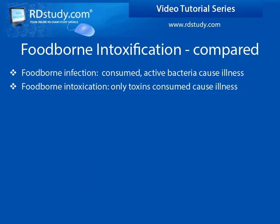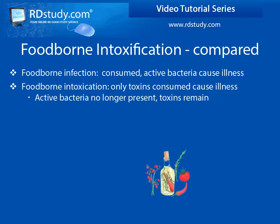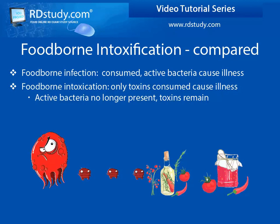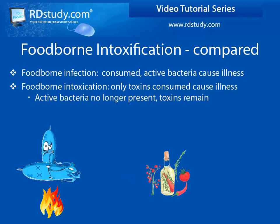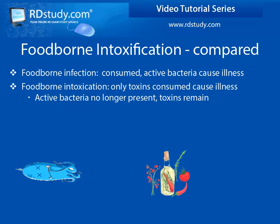Foodborne intoxication occurs when certain types of bacterially produced toxins of a substantial quantity are contained within a consumed food product, and their consumption causes the illness. This most commonly occurs in time-temperature abused foods, as well as homemade refrigerated herb-infused oils, jams, and jellies, as the toxins are produced during the bacterial growth cycle. Proper cooking or reheating may destroy all of the bacteria, but toxins are much harder to destroy and, as such, many types of toxins will persist.